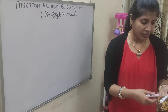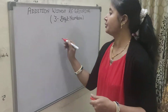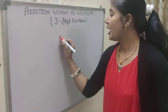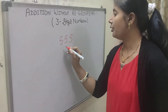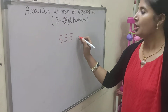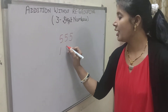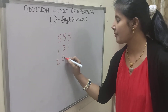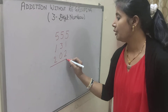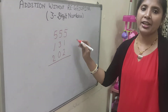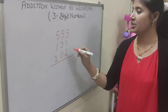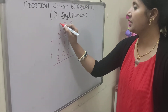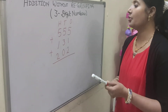Let us take one more example. Suppose we have 555 potatoes, 131 onions, and 255 peas. Now we have to find out the total number of vegetables. So we have to add these numbers. Write the place values: 1s, 10s, and 100, and start the addition from the 1s place.